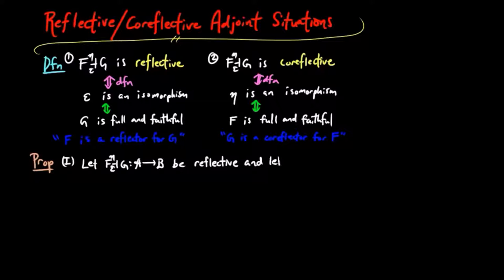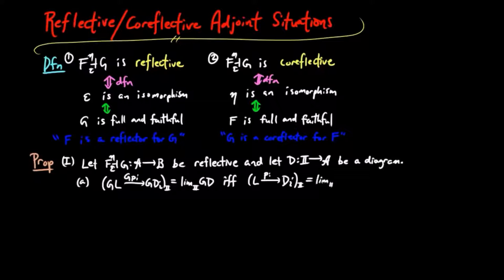one: let FG be reflective and D a diagram in A. Then A, the cone G PI on GD is the limit of GD if and only if the cone PI on D is the limit of D.